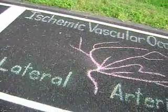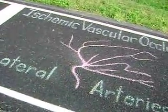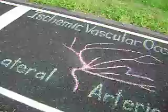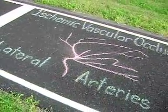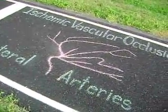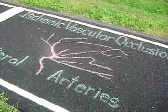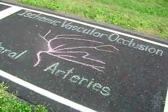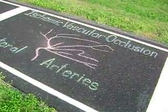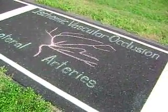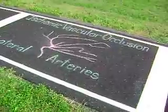The posterior cerebral artery: contralateral homonymous hemianopsia, may produce memory loss, dyslexia without dysgraphia, color anomia, hemisensory deficits, and mild hemiparesis. May be supplied by the anterior circulation.